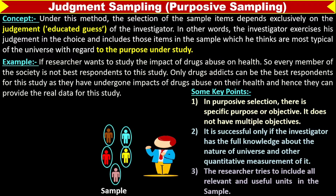Judgment sampling, or purposive sampling, is possible when the researcher tries to include all relevant and useful units in the population.